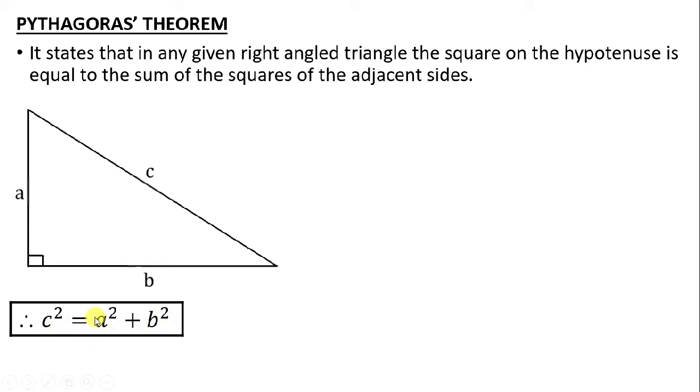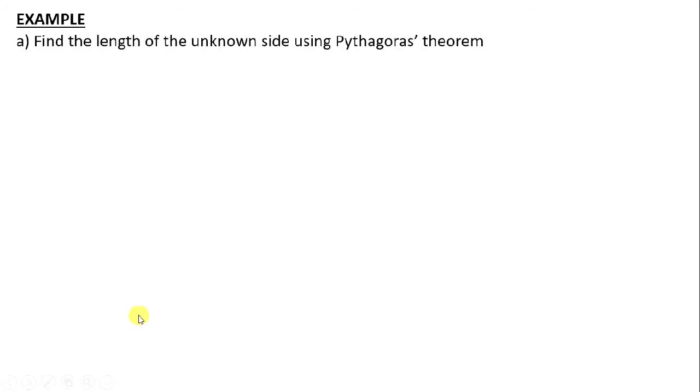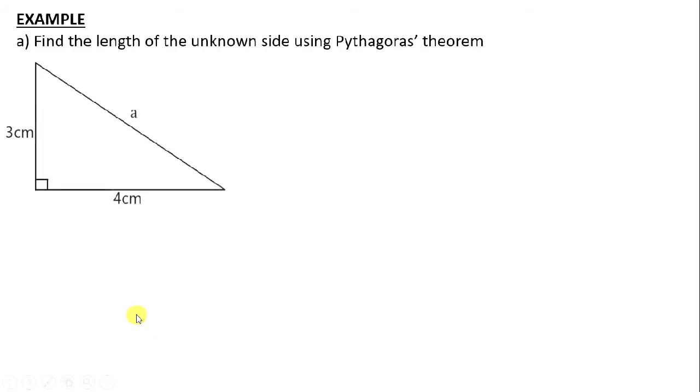Therefore, c squared is equals to a squared plus b squared. Let's look at an example: find the length of the unknown side using the Pythagoras theorem.